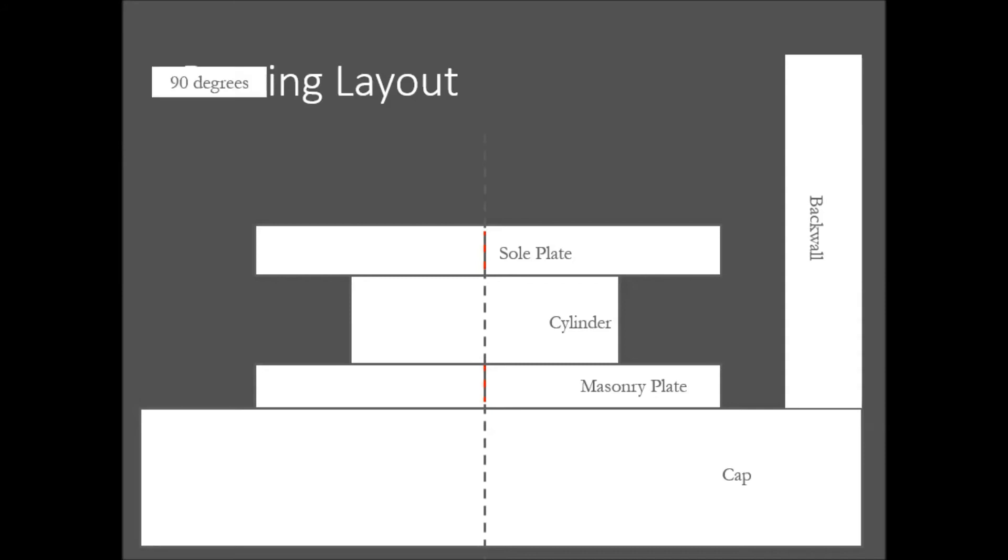First, we will show an example of the adjustment to be made for an ambient temperature of 90 degrees Fahrenheit. From the table, we see that the end rotation correction should be negative 3/16 of an inch. This means we would need to slide the sole plate 3/16 of an inch in the negative direction or away from the free end of the beam.